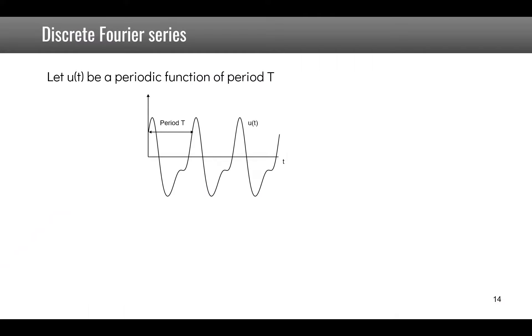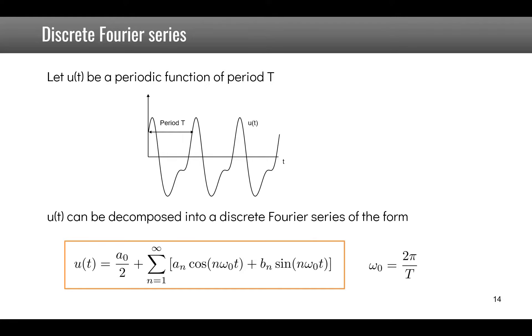Since the frequency content of excitations is very important, mathematical tools can be used. We will now describe the discrete Fourier transform and the continuous Fourier transform. If a signal u(t) is periodic with period T, it can always be decomposed into a discrete Fourier series: a constant term plus a combination of cosine and sine functions at frequencies that are multiples of the fundamental angular frequency ω₀ = 2π/T. Note that the sum is infinite.